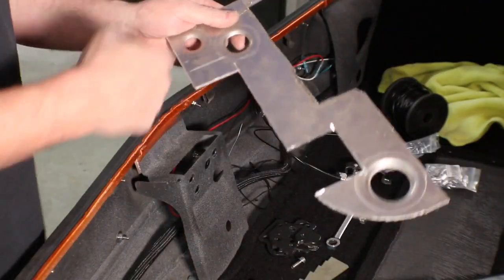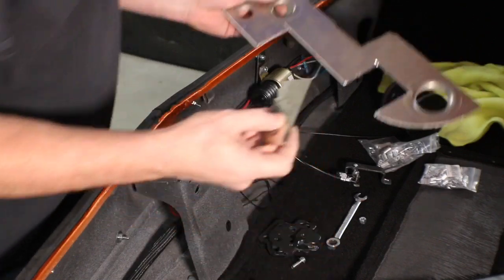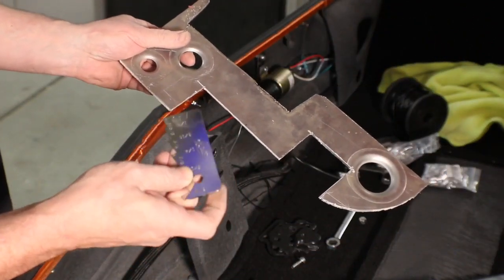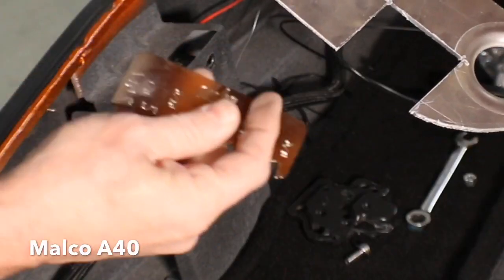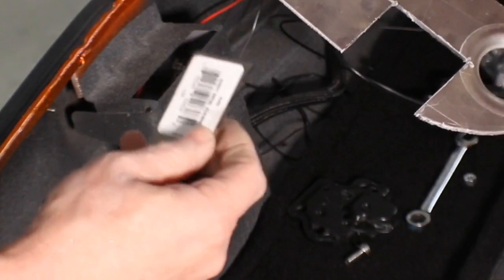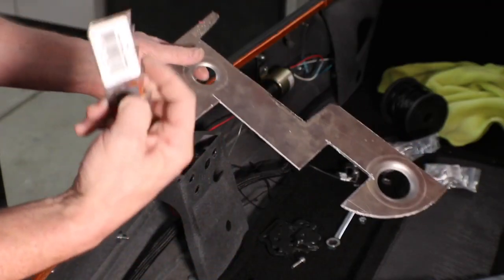And then I'm going to put this on the bandsaw and cut that out real quick. So this particular one is made by Malco, M-A-L-C-O, part number A40. It's got a little magnet on the back. It's called a sheet metal scriber.